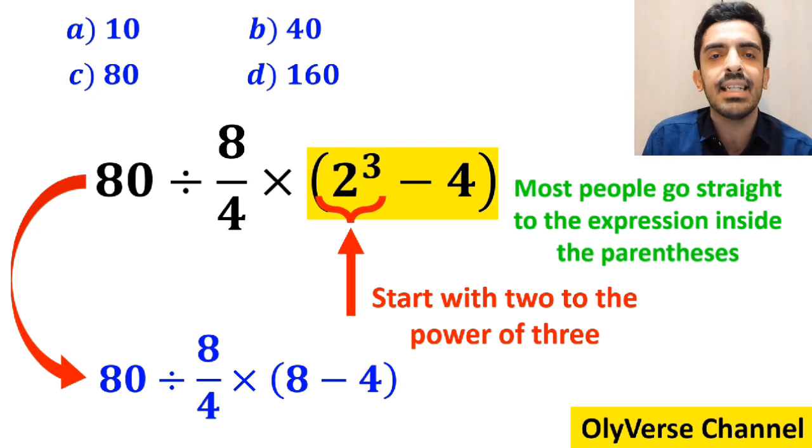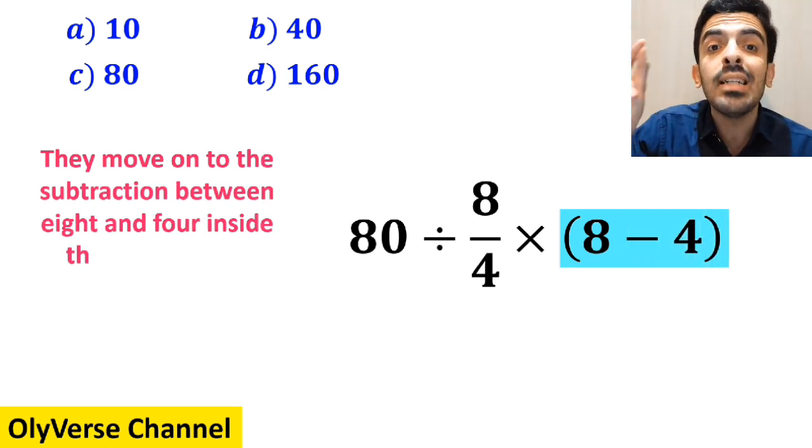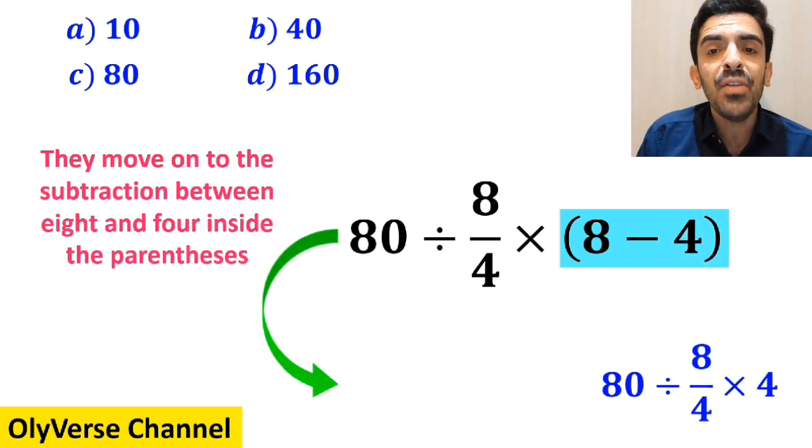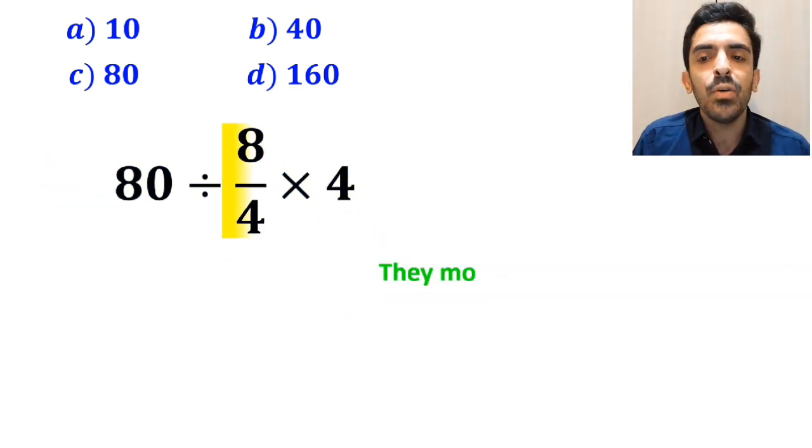The next step, they move on to the subtraction between 8 and 4 inside the parentheses and simplify this expression to 80 divided by 8 over 4 times 4. Then they move on to the multiplication between 8 over 4 and 4 because they believe multiplication takes priority over division.